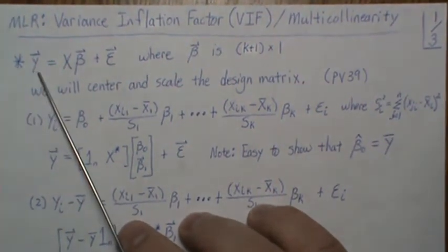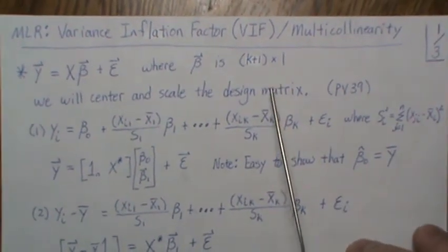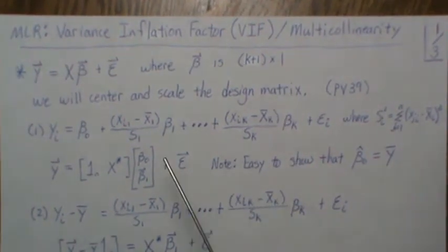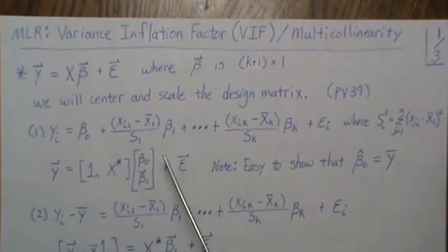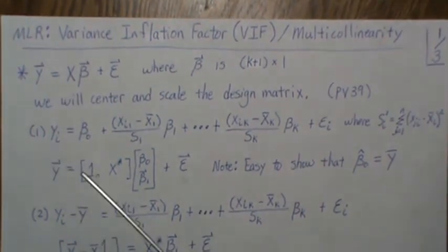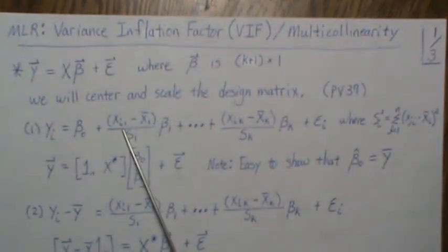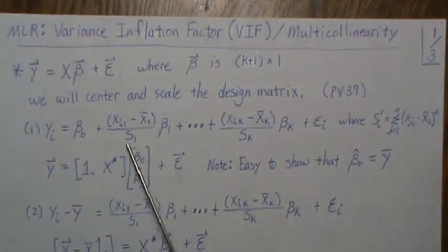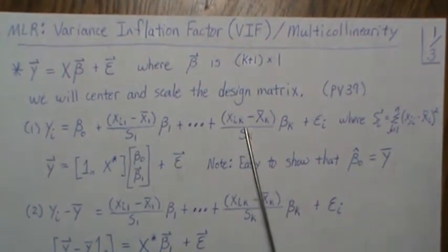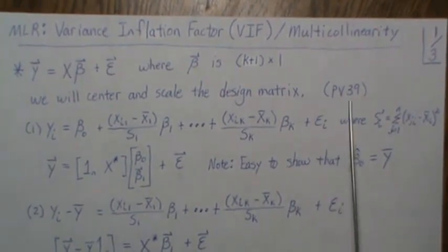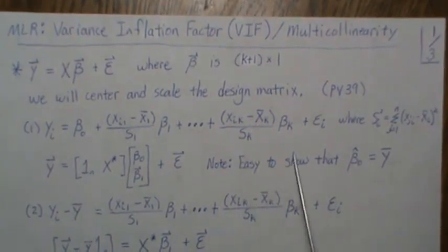We're going to assume we're in the multiple linear regression setting, so y equals X beta plus epsilon. Our beta is a k+1 by 1 vector. We will need to center and scale the design matrix when we look at variance inflation factors. In model 1, we have beta_0, then our first regressor is centered and scaled — the norm makes it length 1 — beta_1, and for all k regressors we center and scale. I would defer you to previous video 39 in my playlist on generalized linear models regression for more details on this.